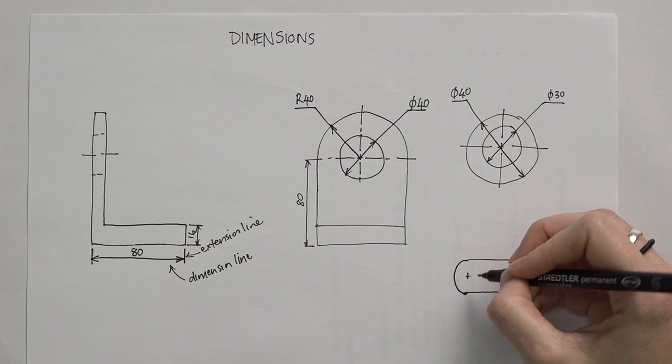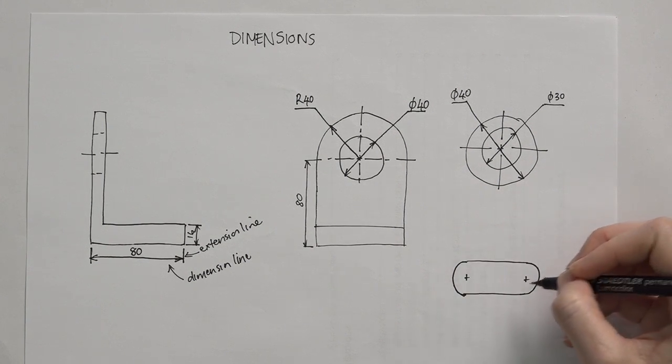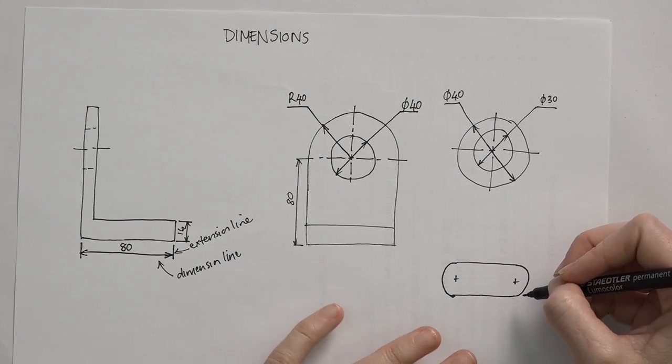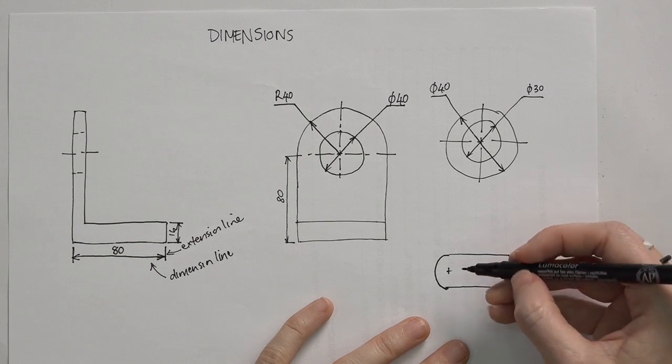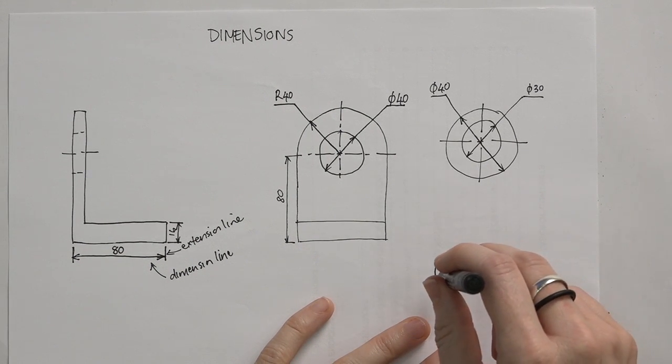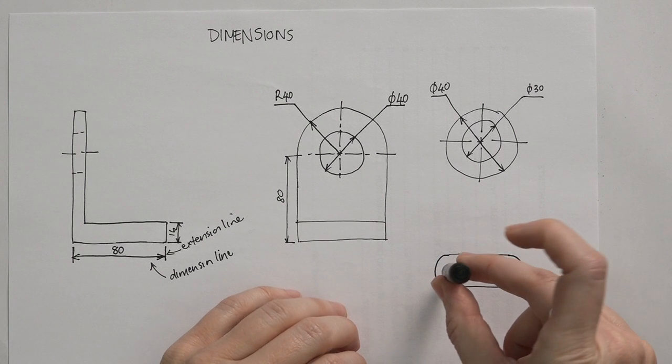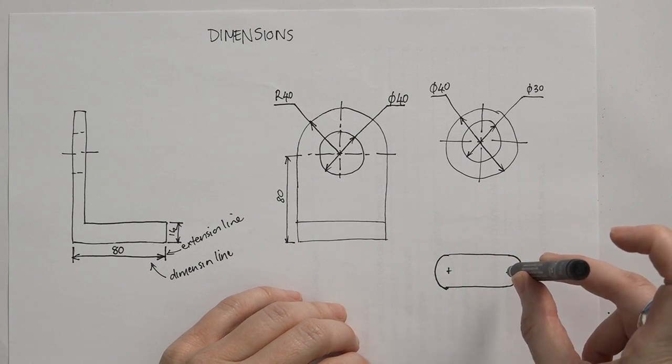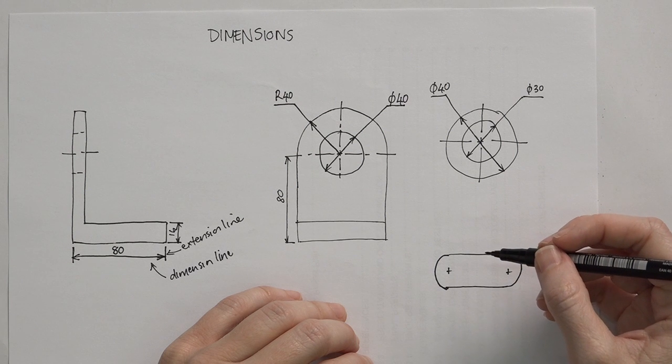So in this case we actually have a half circle, but this is a slot. Now the slot will be manufactured by using a milling point, putting it into one side and then dragging it across to the other center point before taking it out.